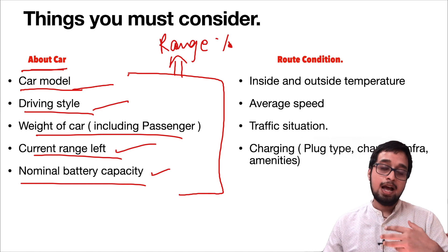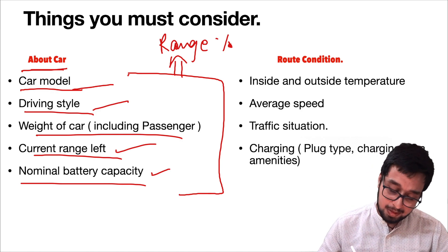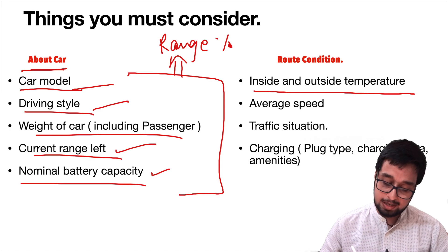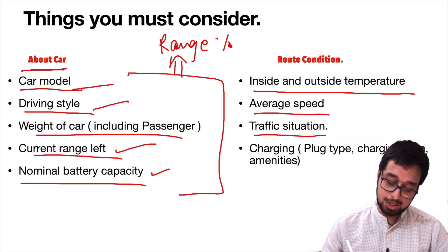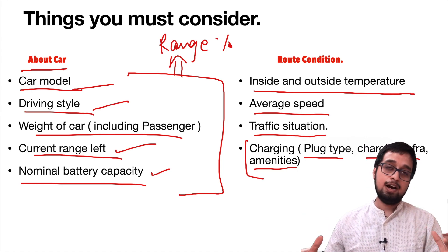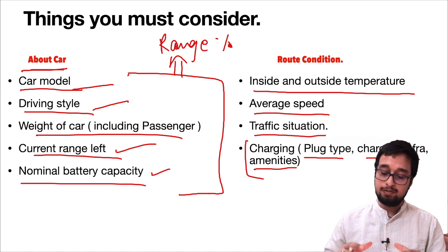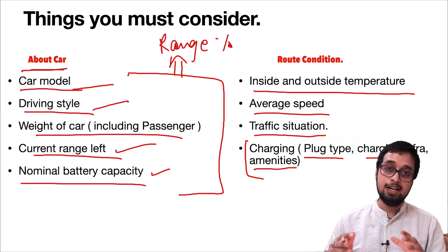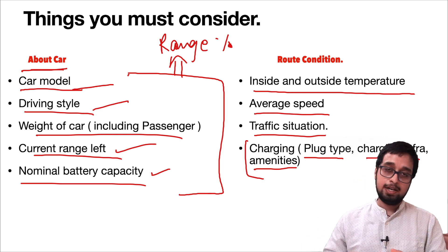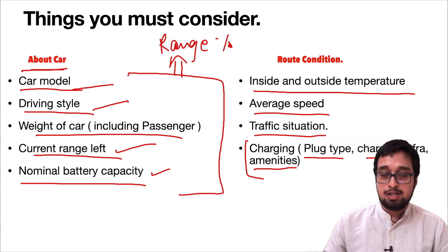Now, route conditions — what are the route conditions and how they will change the range — are things you must consider in your software. The first one is inside and outside temperature, second is average speed, third is the traffic situation, and the last is charging, which includes plug type, charging infrastructure, and amenities. Different customers have different choices and amenities they require when planning their route, and temperature will help you predict a better range or route for your customer.